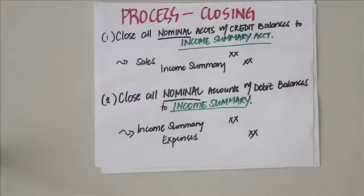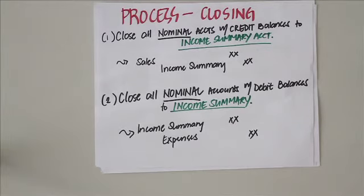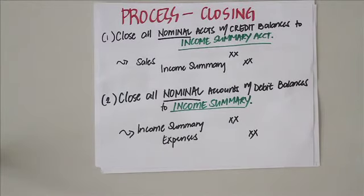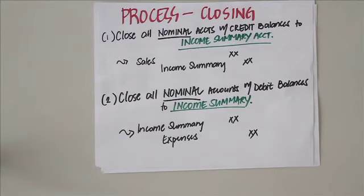The first step is to close all nominal accounts with credit balances to the income summary account. These accounts include your sales and other forms of revenue, purchase returns and allowances, and purchase discounts. Since the normal balance of sales is credit, to close it we make a debit to sales or other revenues and a credit to income summary.